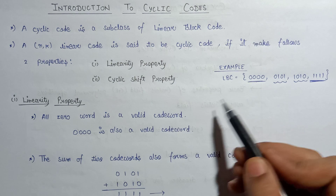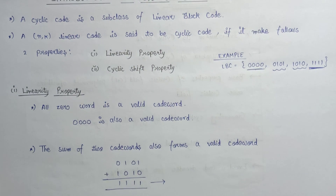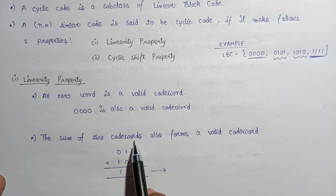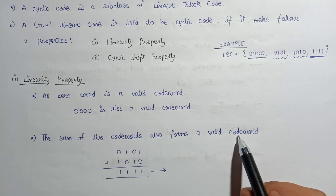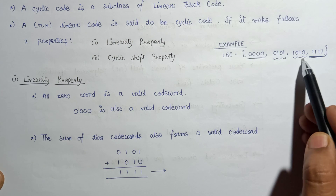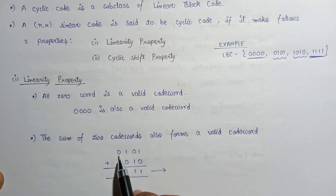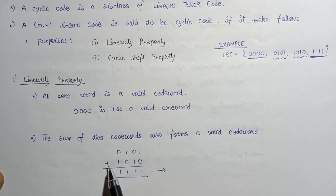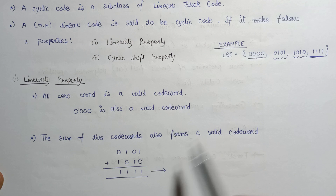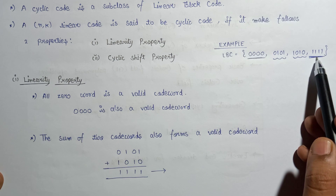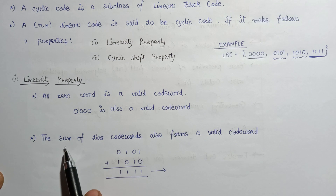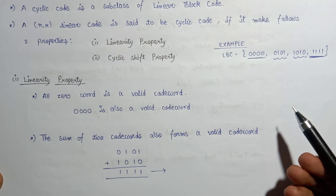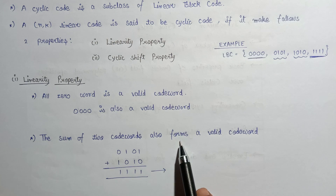The second part states that the sum of two codewords also forms a valid codeword. Taking 0101 and 1010, if we perform the addition operation on these two codewords it comes out to be 1111. This is present inside the linear block code, so 1111 is also a valid codeword. This satisfies the second part of the linearity property.